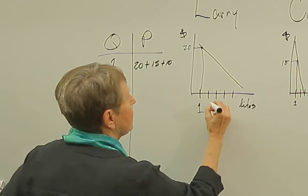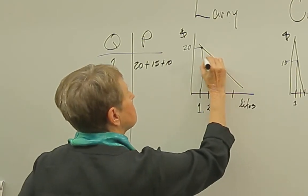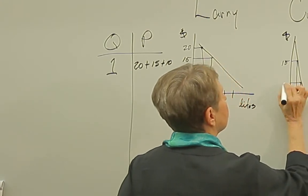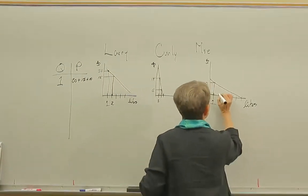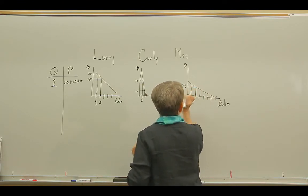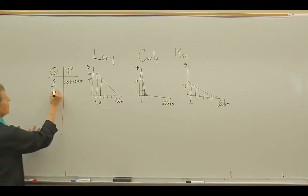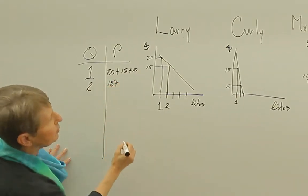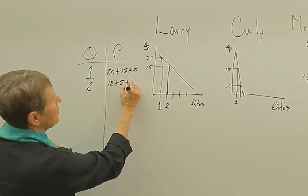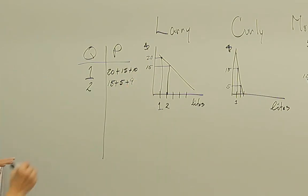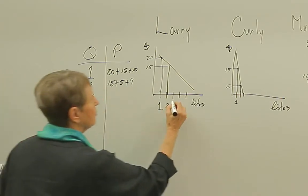Street light number two is worth $15 to Larry, $5 to Curly, and $9 to Moe. So street light number two is worth $15 plus $5 plus $9. And we carry on with this.